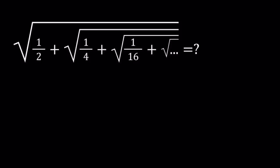Hello everyone. In this video we're going to be working with an infinite radical. We have the square root of 1/2 plus the square root of 1/4 plus the square root of 1/16, so on and so forth, in which each term is squared. So we start with 1/2, square it to get 1/4, square that again to get 1/16. The next one is going to be 1 over 256, so on and so forth.